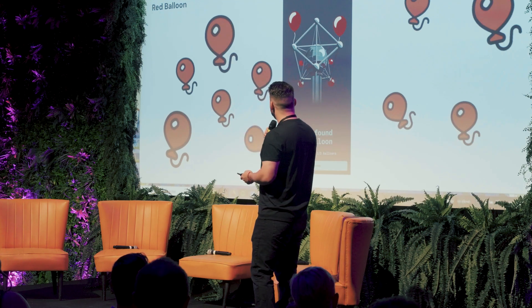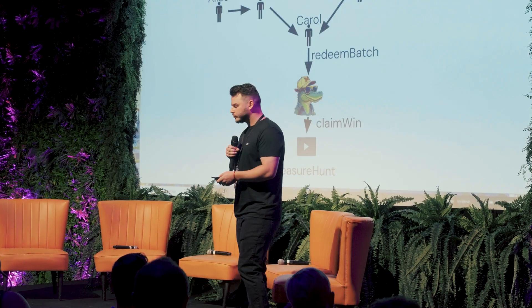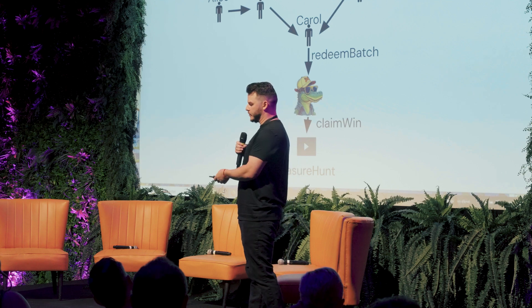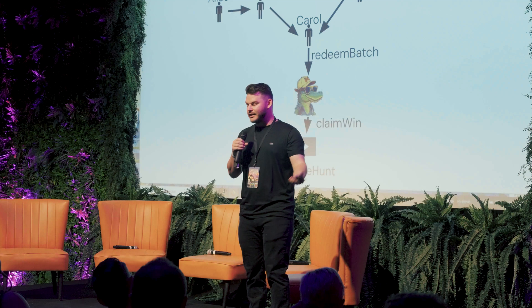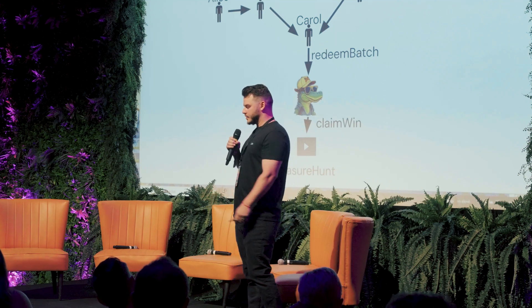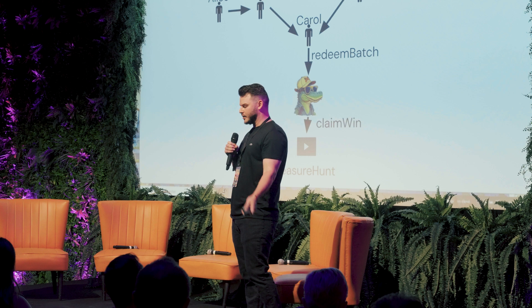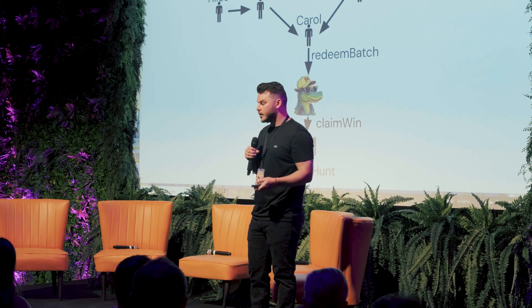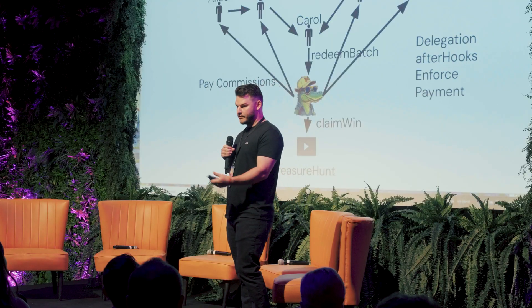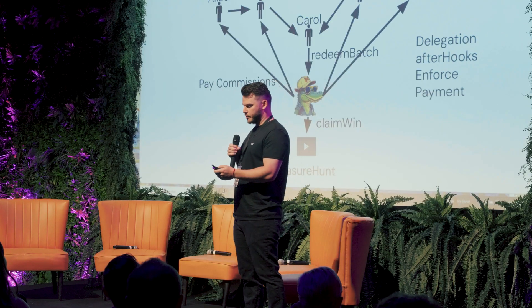Let's talk about Red Balloon. Alice found a red balloon, Dave found a red balloon. Alice shares that with Bob, Bob shares that with Carol, Dave shares it with Frank, Frank shares it with Carol — each adding their own commission. Carol, in fact, has all 10 balloons. She uses her Gator account to redeem batch and claim win on the treasure hunt contract — a total of 11 on-chain actions. But this is only successful if Carol pays the commissions that are required, and this happens in the after hook of the paid copy of enforcer.